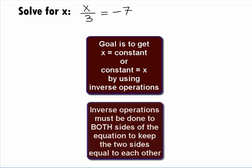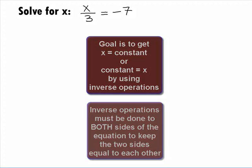When we do the inverse operations, we want to make sure that we do the same thing to both sides in order to keep the two sides of the equation equal to each other. It looks like x is on one side, but not by itself. We need to move that 3 that x is being divided by.